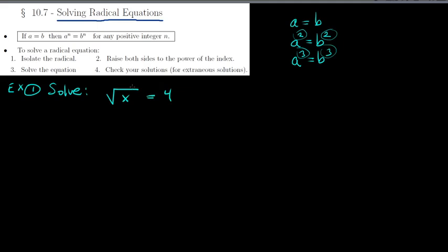A lot of you can probably guess the answer, but in general they won't all be this easy, so let's figure out how to do this systematically. The idea is to get rid of the square root — isolate it first. It's already isolated on the left side, so now raise both sides to the power of the index. The index here is 2 because it's a square root.